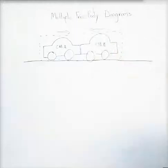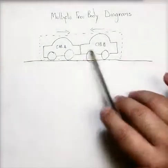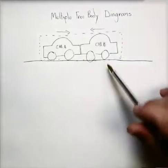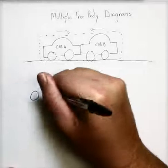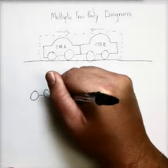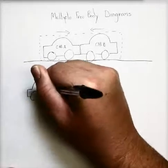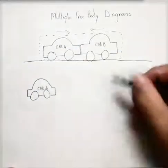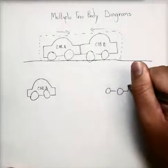So I draw a box around the cars. But now what I'm going to do is instead of trying to draw my diagram of these two things together, let's actually pull them apart and do each one separately. So I'll draw car A all by itself, and we'll do the same for car B over here.